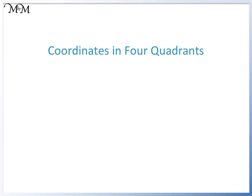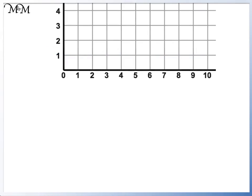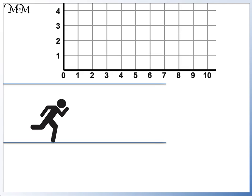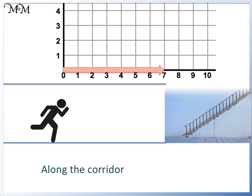Hi and welcome to our lesson on coordinates in four quadrants. To help us remember the correct order for reading coordinates, we can think of along the corridor, which means across, and up the stairs, which means up or down.